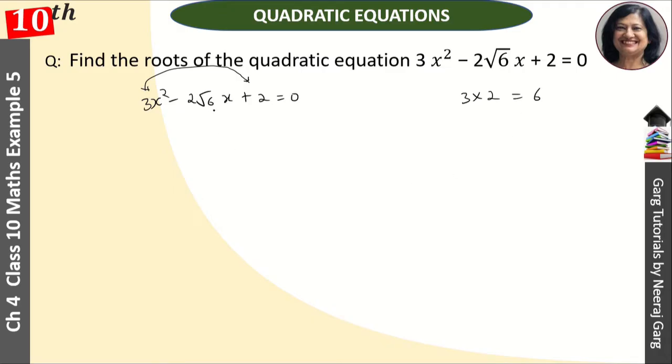Now, we have to make factors which will be 2 root 6. So, we will make factors because there is root 6. Root 6 is a factor, root 6 and root 6.